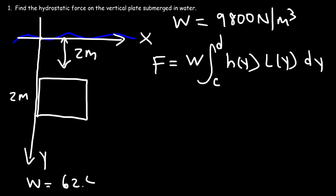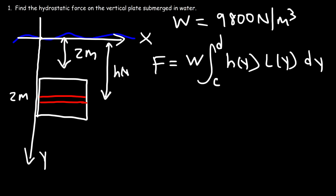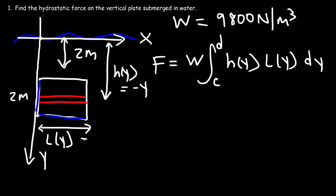Now we need to determine h(y) and l(y). For any portion of the vertical plate, it is y units below the surface, so h(y) is almost always negative y. And l(y) represents the length of the plate along the x-direction. Since we're dealing with a square plate, l(y) is constant at two meters.